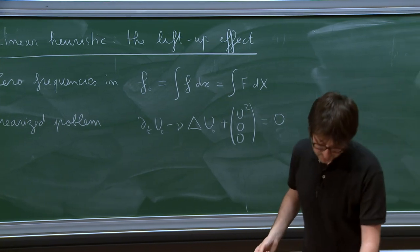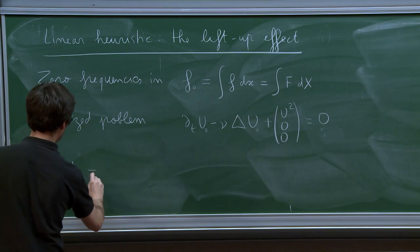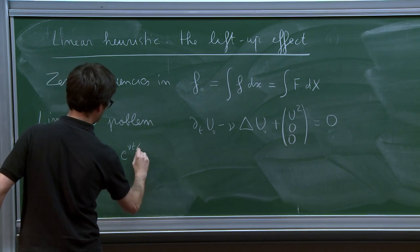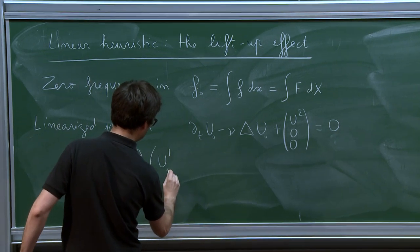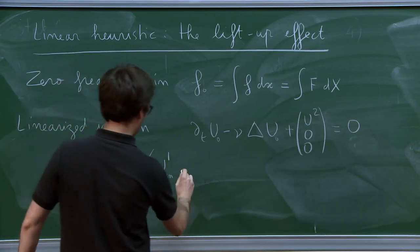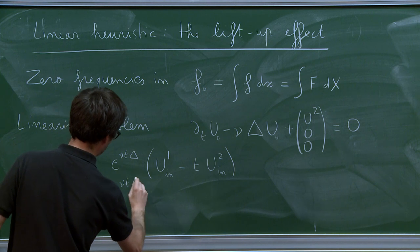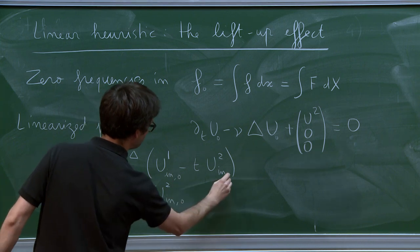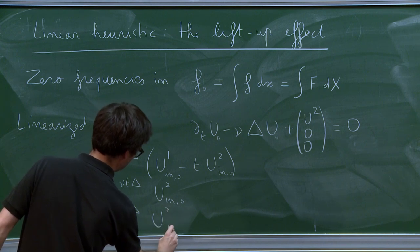So the only thing that remains is dt u minus nu Laplacian u. So I put a zero to indicate that it's zero frequency in x, plus u2 equals 0. So that's very simple, and you can actually explicitly solve. And you find that u0 is... So the first coordinate is e nu t Laplacian u1. So here I put in for initial to distinguish from the zero, which is the zero frequency, minus t u2 initial, e nu t Laplacian u2 initial, initial zero, right? Everything is at zero frequency. e nu t Laplacian u3 initial at time zero.